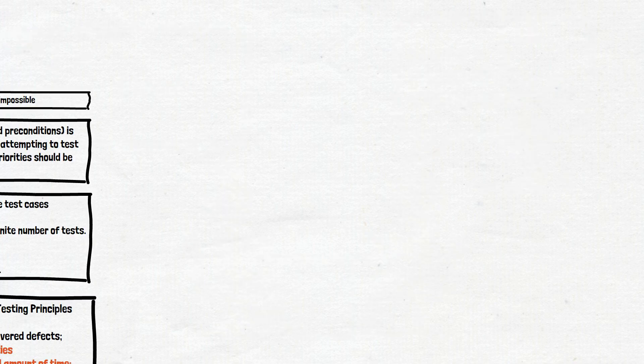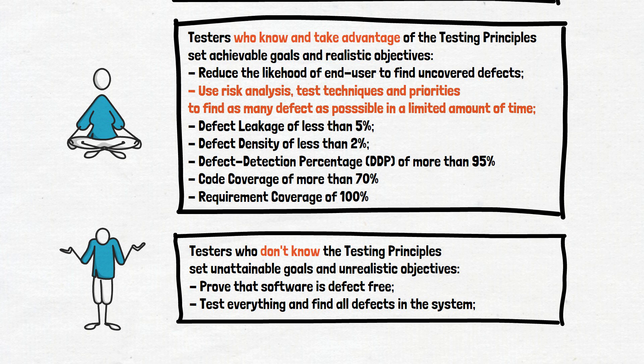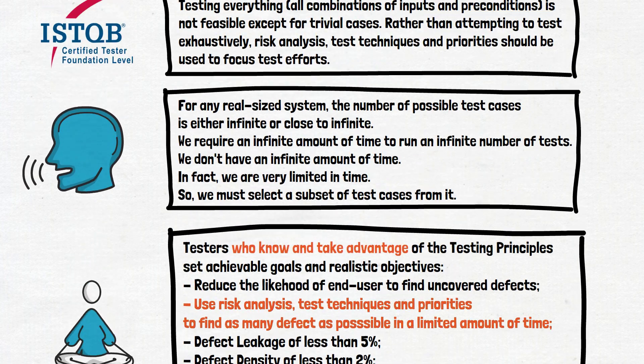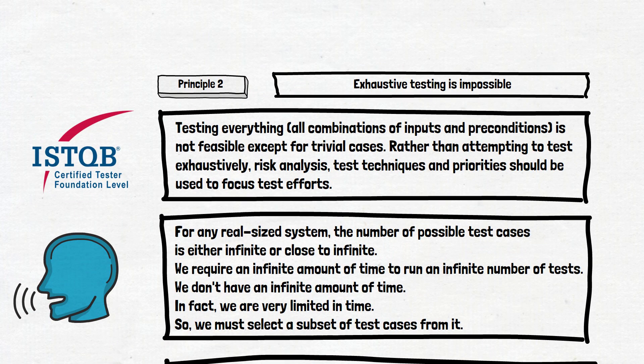You can pause the video and check the explanation of the test principles one more time, or check the benefits of knowing the 'exhaustive testing is impossible' principle. Long story short: we are very limited in time and we can't test everything that is possible. So we need to select a subset of the most important and most efficient test cases to test as much as possible in a limited amount of time. The size of that subset is context dependent, which is another testing principle we'll discuss in a separate video.